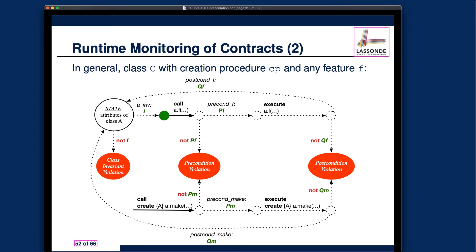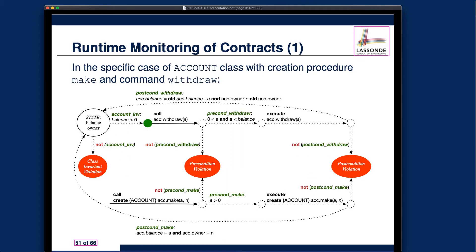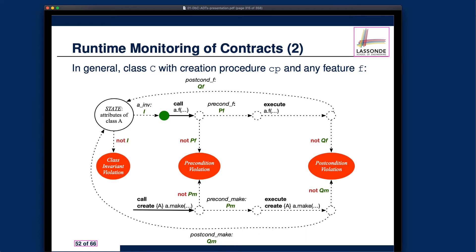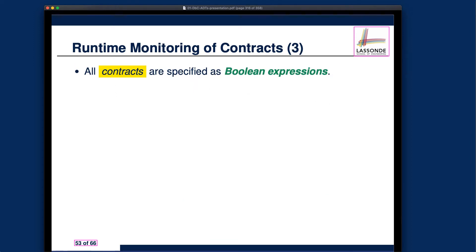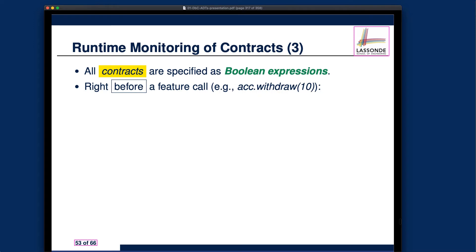This first diagram generalizes the account example we have been running through this lecture to make it more general about any feature. That one is for those of you who might be more abstract minded, so I'll leave that to you. This slide basically summarizes what we're going to see in the state diagram — I'll go through them without cutting into detail since I will cover that already in the diagram.